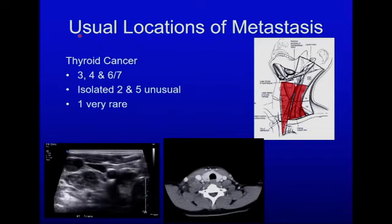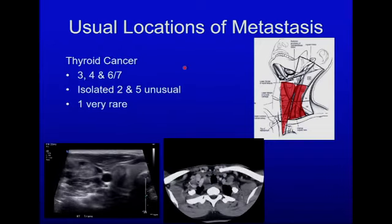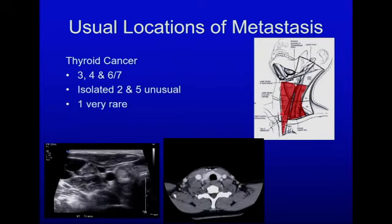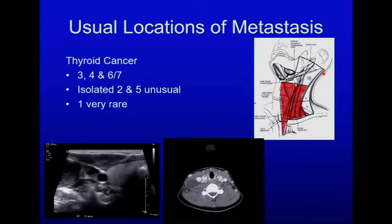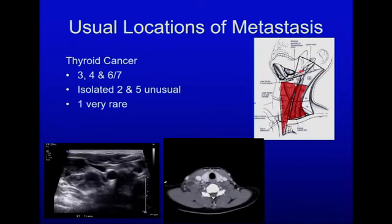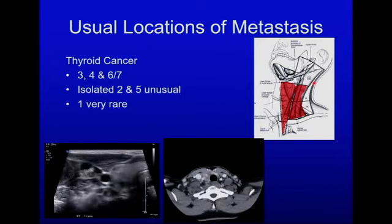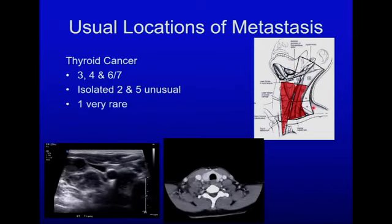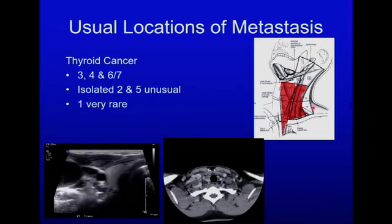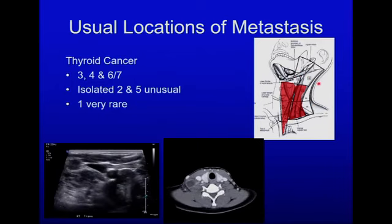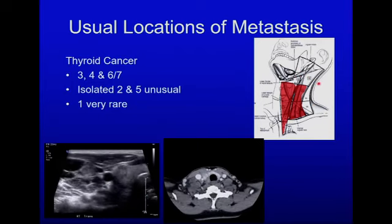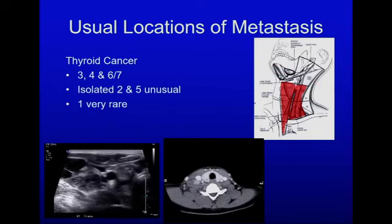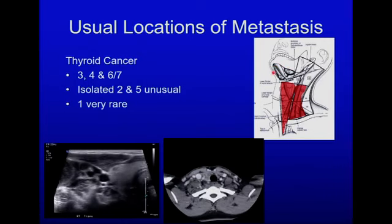Thyroid cancer spreads to lymph nodes in the neck, tending to involve levels 3 and 4, as well as levels 6 and 7 in an untreated neck. Isolated metastasis to level 2 or level 5 is uncommon in an untreated neck except in extensive disease. Once the neck has been treated, isolated recurrences in levels 2 or 5 can occur but remain uncommon. Disease involving level 1 is quite rare except in extensive disease.